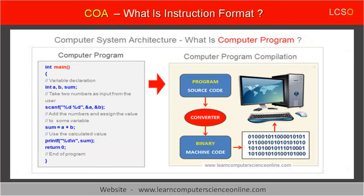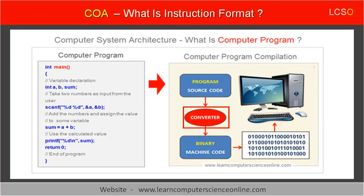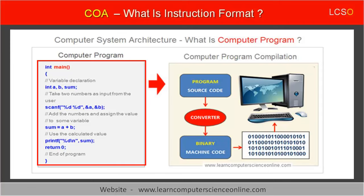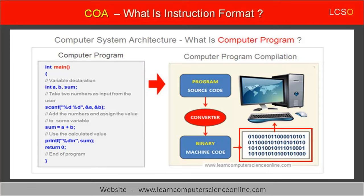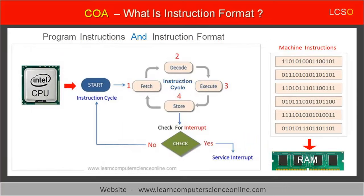The processor can execute only machine instructions in binary. The binary code consists of only two digits, that is 0 and 1. Therefore, all computer programs are first compiled to binary format. The compiler translates the high-level program statements into their equivalent machine instructions in binary format. In computer architecture, the instruction is defined as a machine instruction in binary that can be directly executed by the processor.